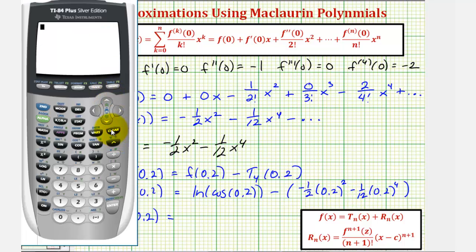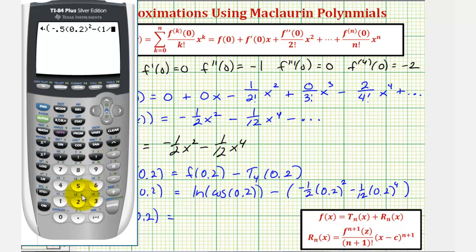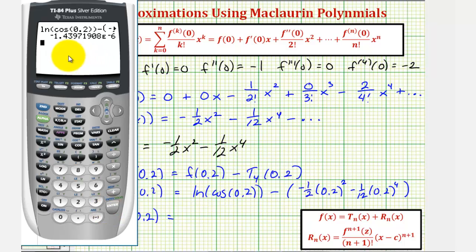First we verify we are in radian mode by pressing the mode key — radian is highlighted. We go back to the home screen and enter natural log of cosine zero point two, minus the quantity negative one-half times zero point two squared, minus one-twelfth times zero point two raised to the fourth, and press enter.